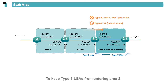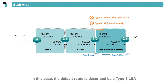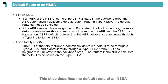To keep Type 5 LSAs from entering Area 2, set Area 2 as a totally NSSA. In this case, the default route is described by a Type 3 LSA. This slide describes the default route of an NSSA.